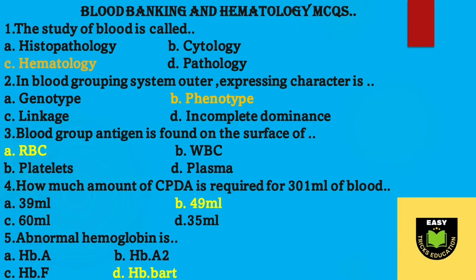Question number two: in blood grouping system, the outer expressing character is — option B, phenotype. Question number three: blood group antigen is found on the surface of — option A, RBC.